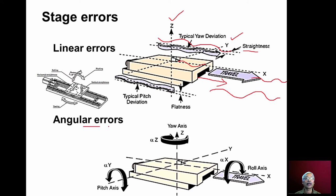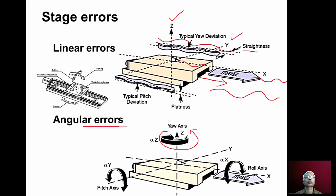Coming to the angular errors in each axis, there can be yaw error — the table rotating in this fashion. Similarly, along the pitch axis the table surface may tilt, and along the x-axis the table surface may roll. So apart from linear errors in x, y, z direction, there can be roll axis error, yaw axis error, and pitch axis error.